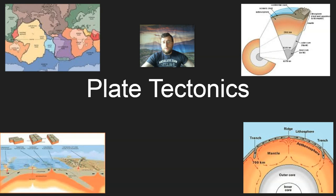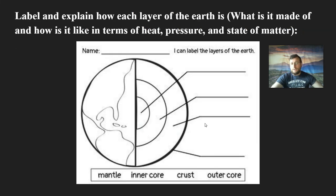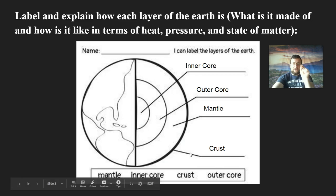The first objective is that the Earth has interior movement and layers which affect the surface. The Earth is split into three or four different segments by scientists: the inner and outer core, the mantle, and the crust. The mantle makes up most of the volume of the Earth, and the crust is just a tiny little sliver.